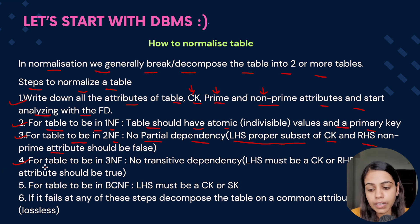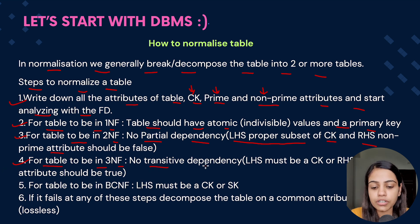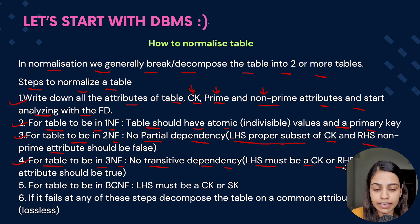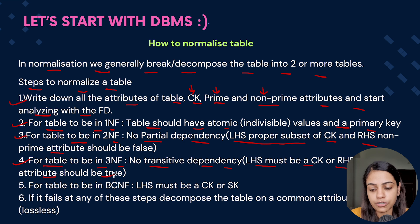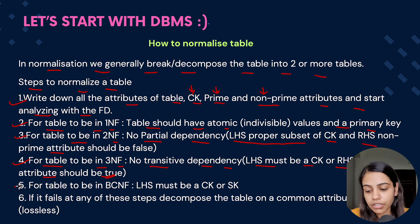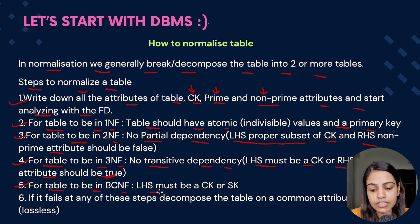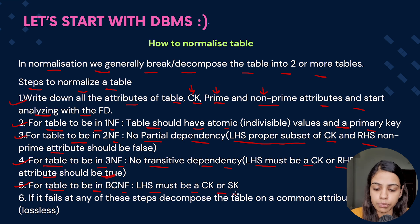For the table to be in third normal form, there shouldn't be any transitive dependency — that is, LHS must be a candidate key, or RHS should be a prime attribute; that should hold true. For a table to be in BCNF, LHS must be a candidate key or super key.